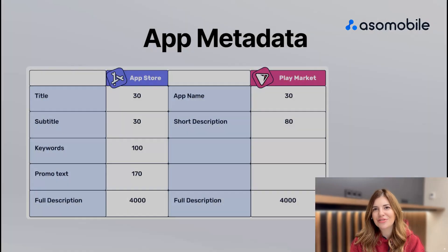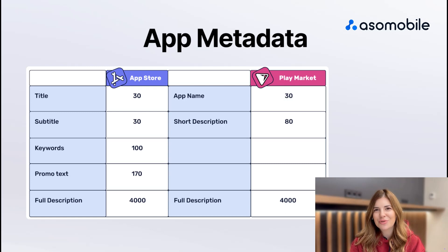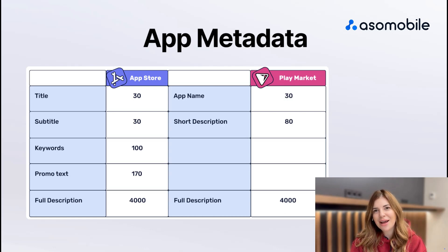Let's delve into the world of app metadata, with a special focus on the unique characteristics of the App Store and Google Play Store. Understanding these differences is essential for effectively optimizing your app for each platform. Starting with the App Store, your app title is limited to 30 characters.